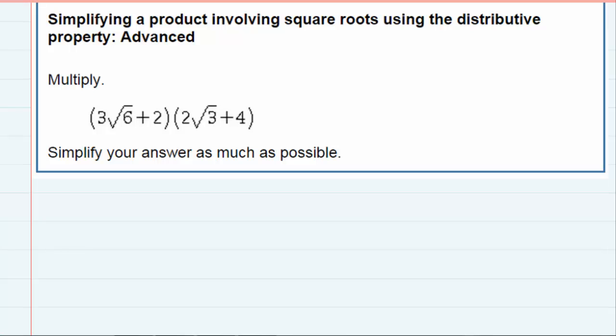We're asked to multiply these two expressions and then simplify our answer as much as possible. Since the first is a binomial with two terms and the second is a binomial with two terms, I'm going to start off by distributing.